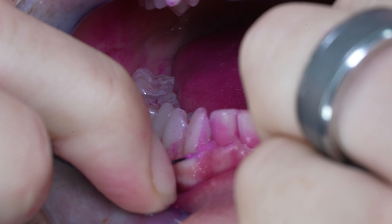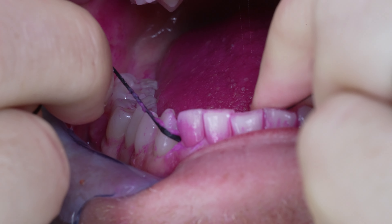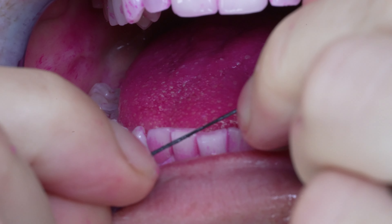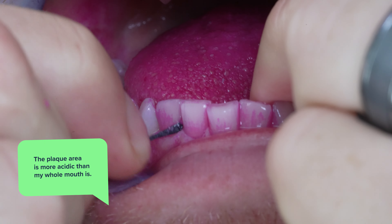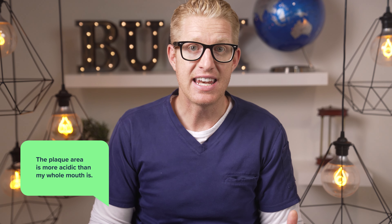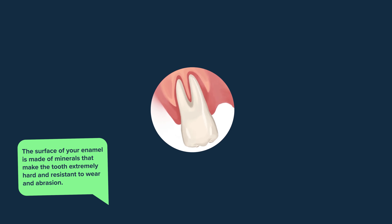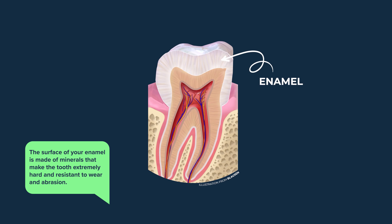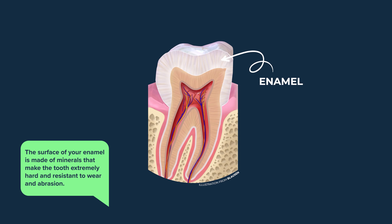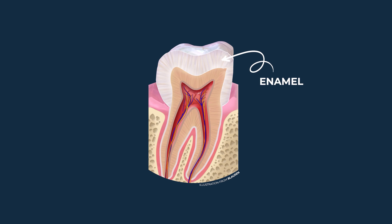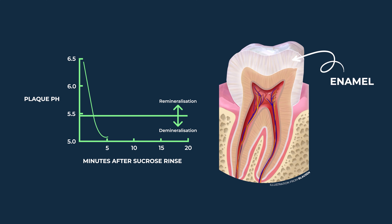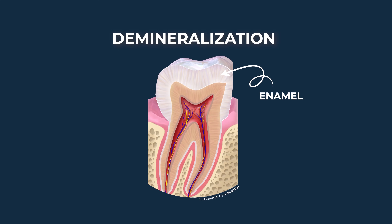The plaque biofilm traps a lot of the acidity that the bacteria is producing within the plaque itself. Some of it escapes into the whole mouth, but the plaque area is even more acidic. This acidity then starts a process called demineralization. Once the acidity touching my teeth drops below a pH of 5.5, the teeth really start to demineralize. The surface of your enamel is made of lots of little minerals that make the tooth extremely hard and resistant to wear and abrasion. Wherever your tooth is attacked by an acidity level below pH 5.5, the tooth surface starts to release those minerals.